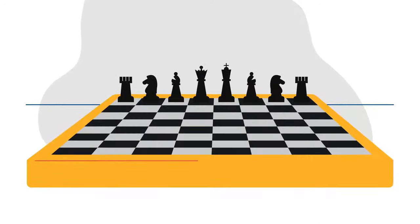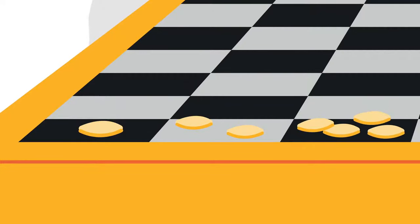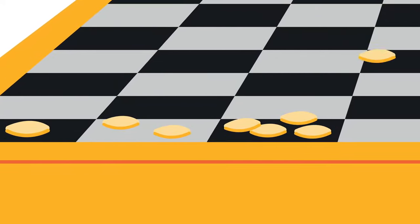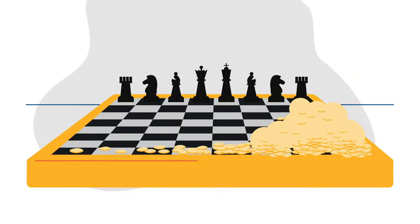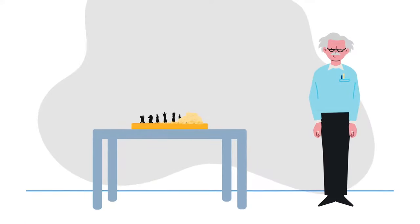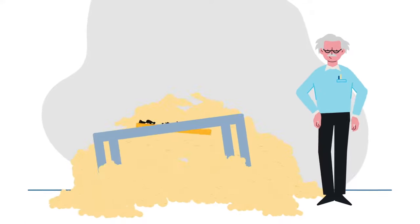Imagine placing a single grain of rice on the first square, and then doubling each square's amount on the subsequent square. So, two on the second square, then four, then eight, then sixteen, and so on. Believe it or not, by the twentieth square, you'd have over a million grains of rice.